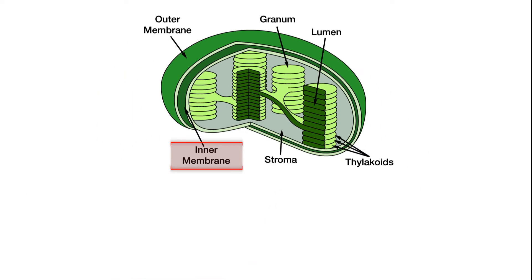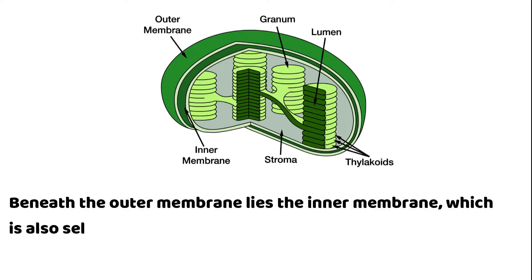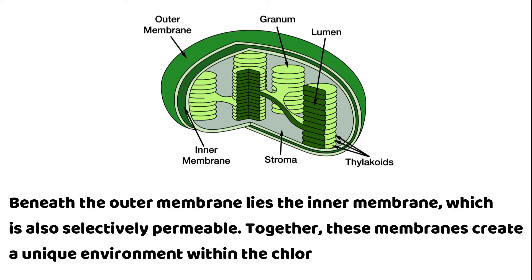Inner Membrane: Beneath the outer membrane lies the inner membrane, which is also selectively permeable. Together, these membranes create a unique environment within the chloroplast.